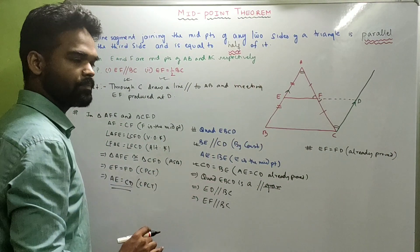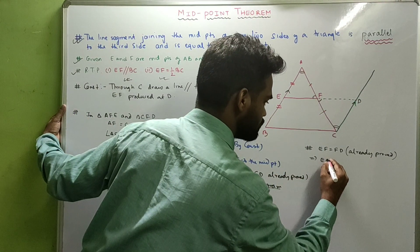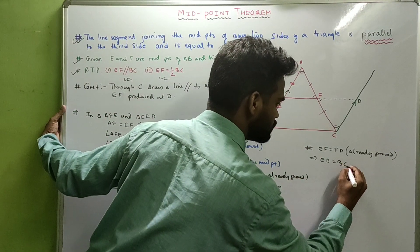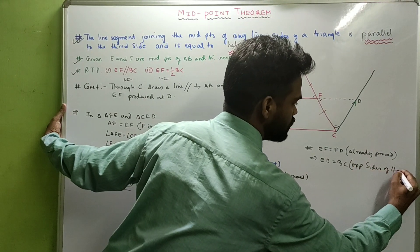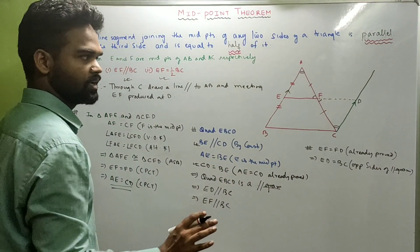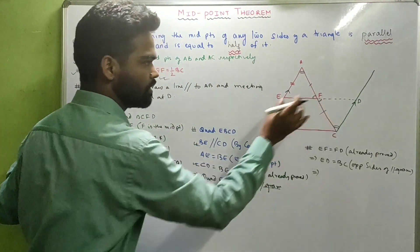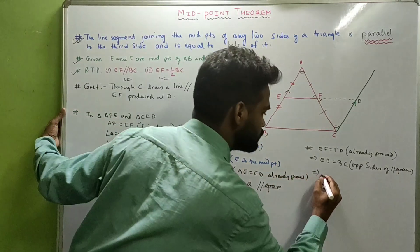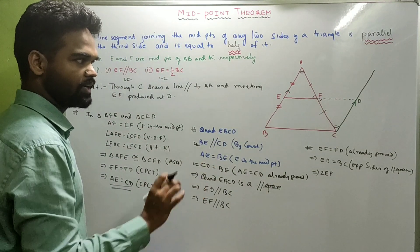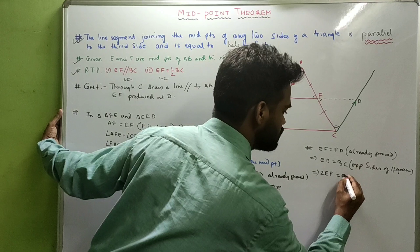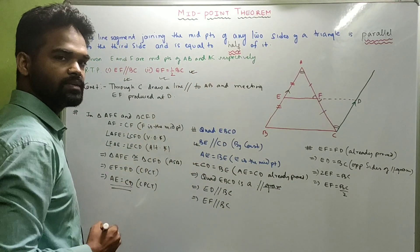Since EBCD is a parallelogram, ED is equal to BC — opposite sides of a parallelogram are equal. Now ED is nothing but twice of EF, because EF and FD are equal. So ED equals twice EF, which equals BC. Which means EF equals BC divided by 2 — EF is half of BC. Done.